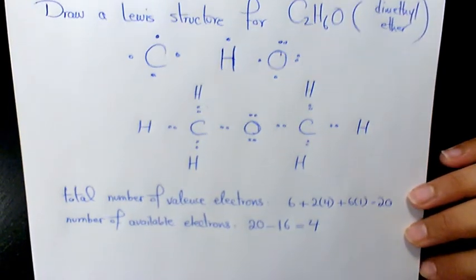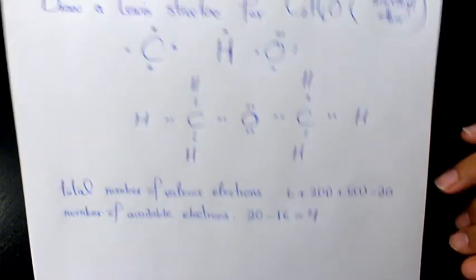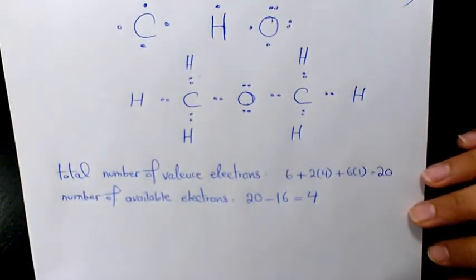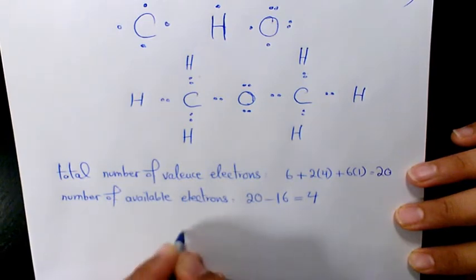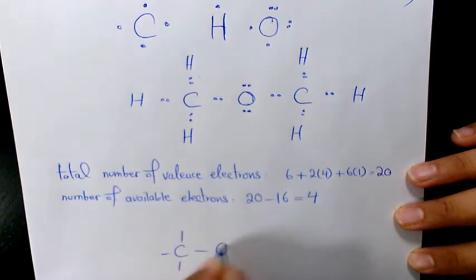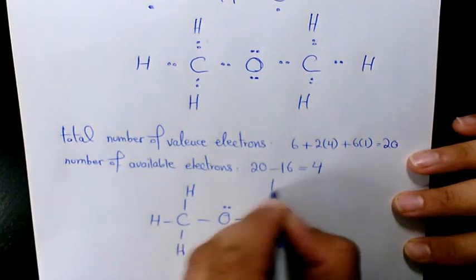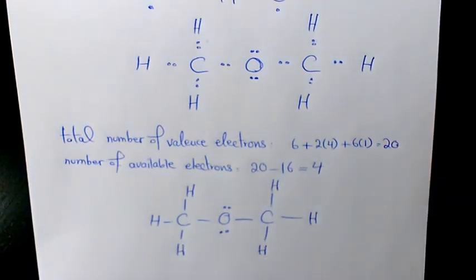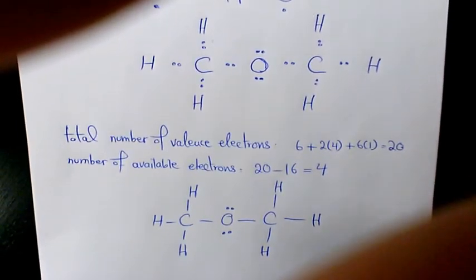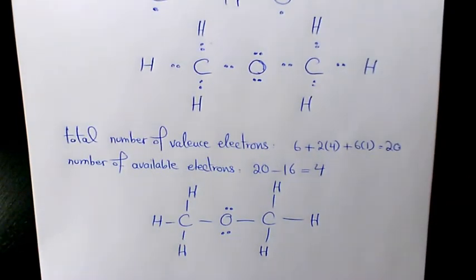So now our Lewis structure is complete. What we need to do is place dashes instead of the bonding electrons: hydrogen, hydrogen, hydrogen, hydrogen, hydrogen, hydrogen, and hydrogen. So that's the Lewis structure of dimethyl ether. I hope you enjoyed this video — please don't forget to subscribe to this channel. You can have access to many other videos regarding chemistry, physics, and math. Thank you for watching and have a great day.